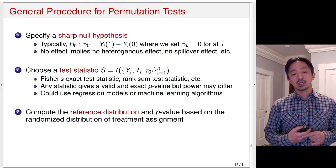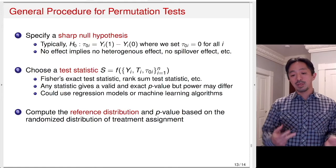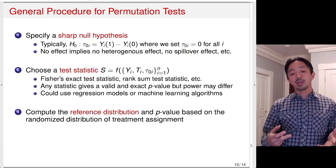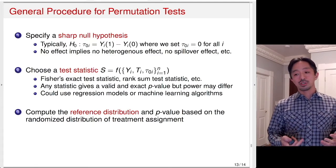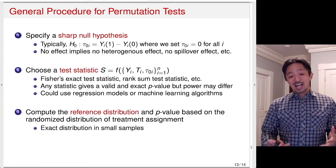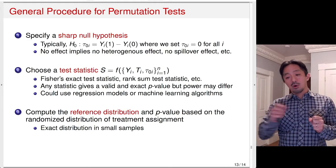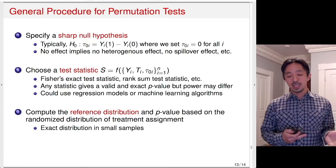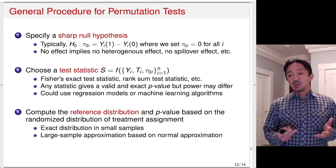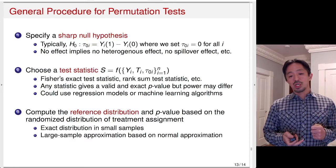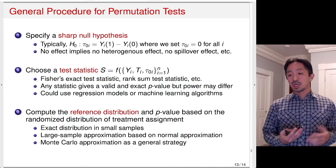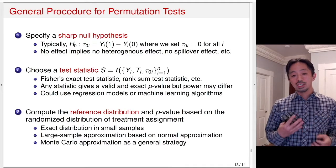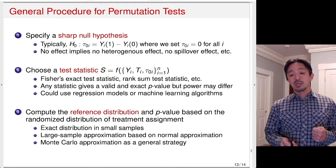Finally, compute the reference distribution and p-value based on the randomized distribution of the treatment assignment. Since we know how treatment was randomized in the experiment, we use the design to construct the reference distribution. For very small samples, enumerate all possible treatment assignments exactly. For larger samples, use large-sample approximations such as normal distribution. More generally, Monte Carlo approximation can be used and is feasible even when the randomization distribution is very complicated.